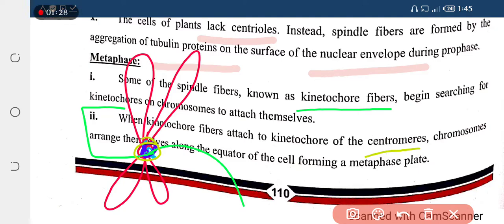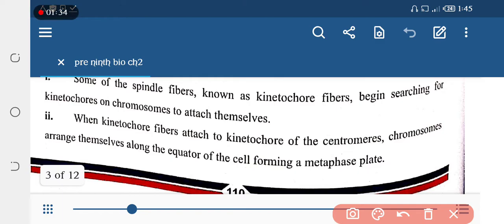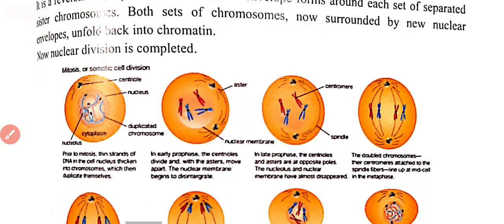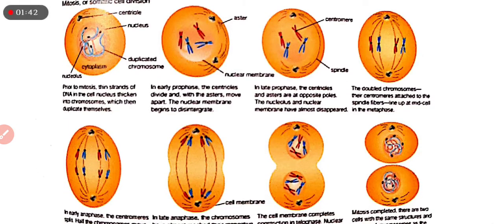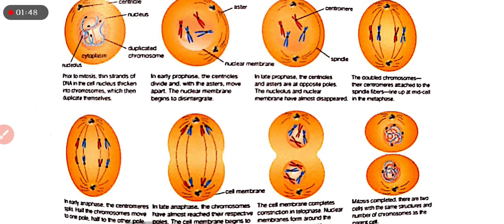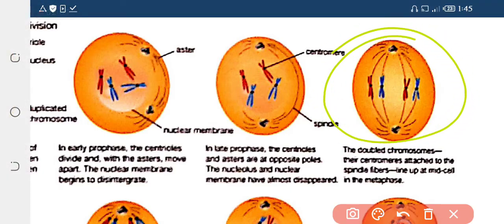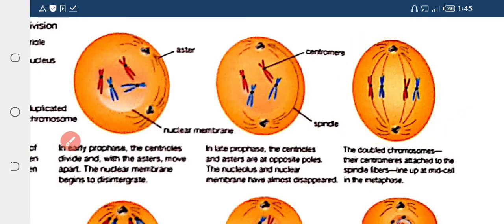Chromosomes arrange and align along the equator of the cell, forming a plate-like structure. I will show you in a diagram. As you can see, the chromosomes are arranged at the equator. We call this plate-like structure the metaphase plate.